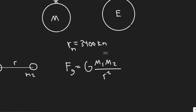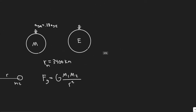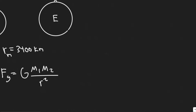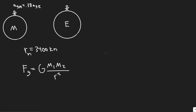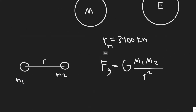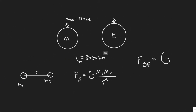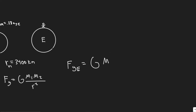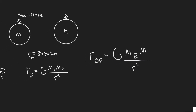If we wanted to find the force due to gravity on Earth, we would call it F_G on Earth, multiplied by G. The two objects in this case are the person and the Earth. So we have M_E and then the mass of our object M, divided by R squared. This is the force due to gravity on Earth.